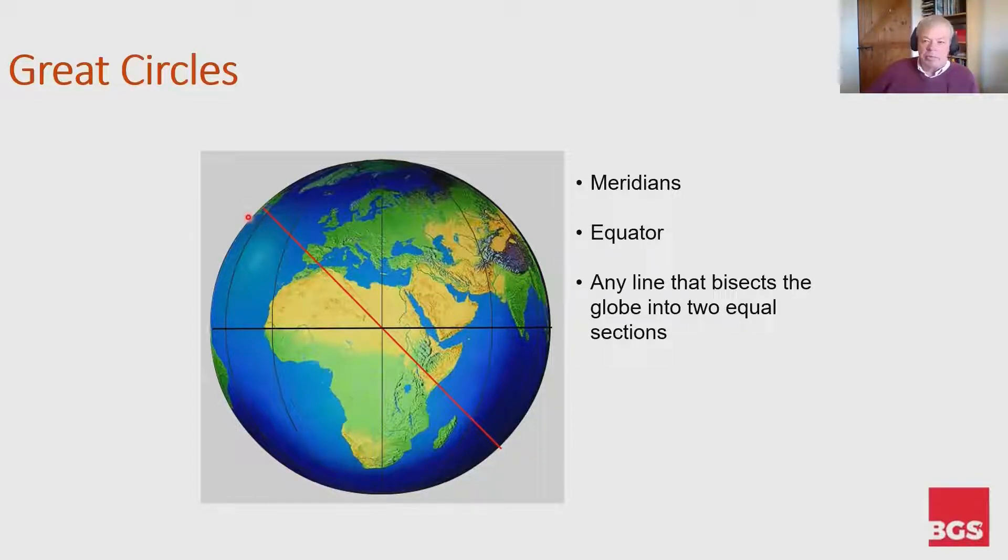Later we'll be talking about the properties of the great circle and particularly these two points. The one down at the bottom there, which is the southern vertex of that complete great circle, and that point at the top, which is the northern vertex of that particular great circle.